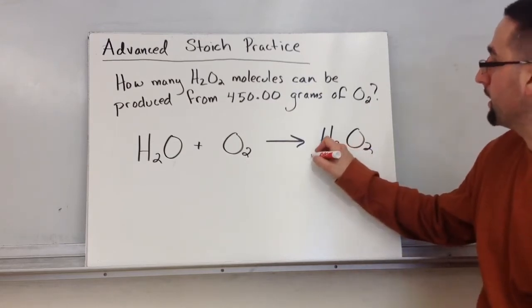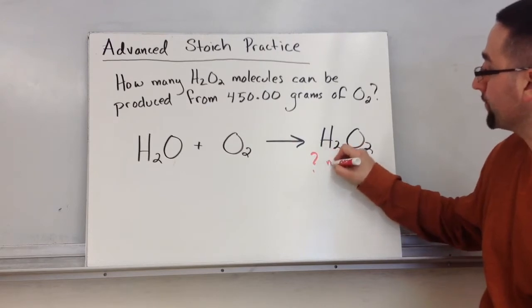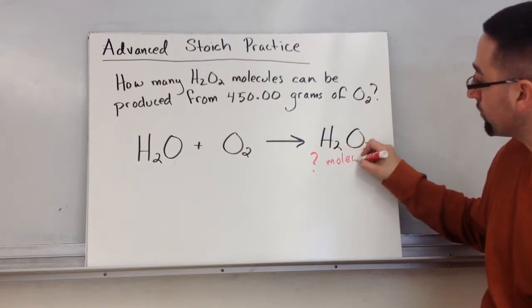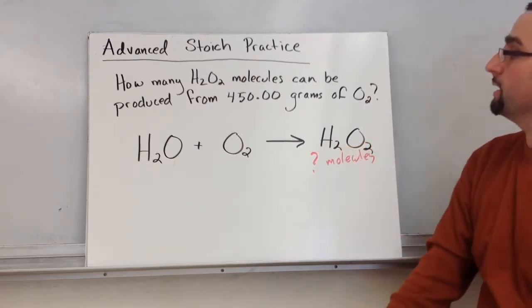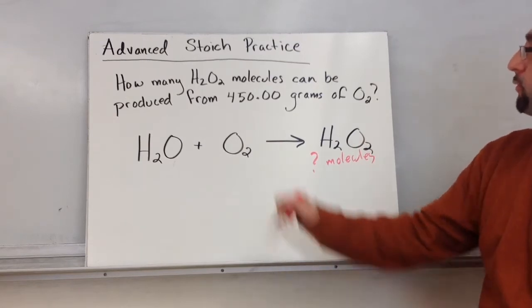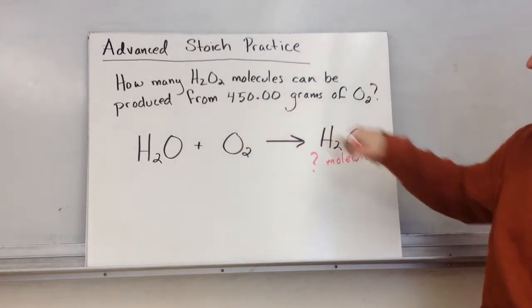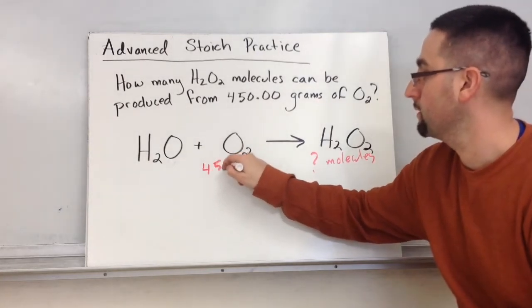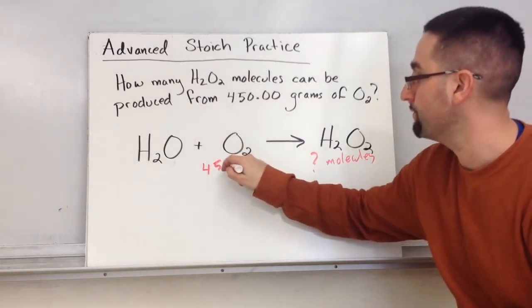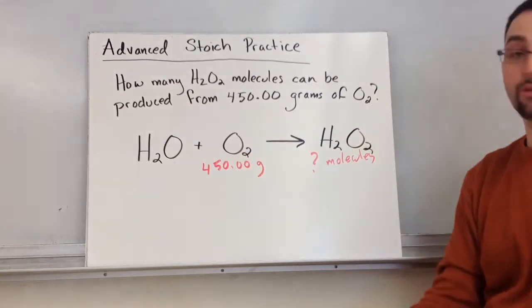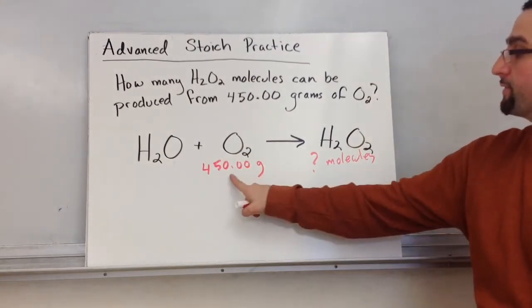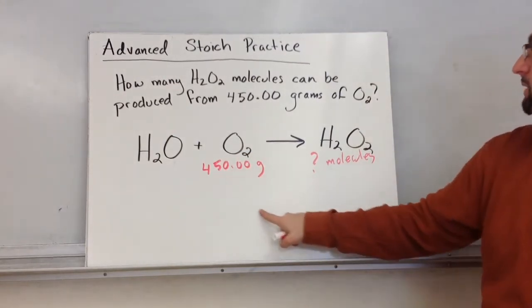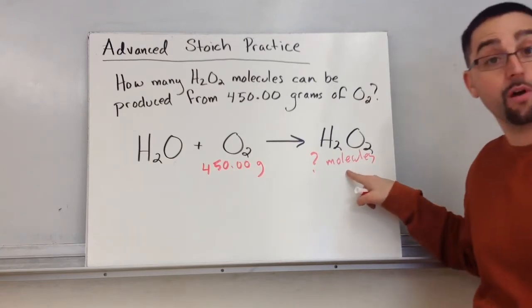So I want to know in this problem, how many peroxide molecules can be produced from 450 grams of O2? So 450 grams. In other words, if we start off with this much reactant, how many molecules of our product are we at?